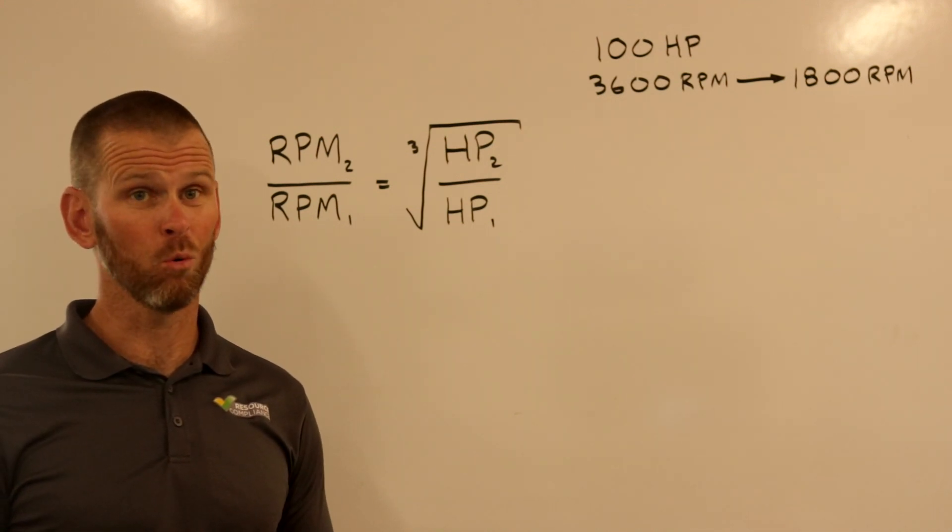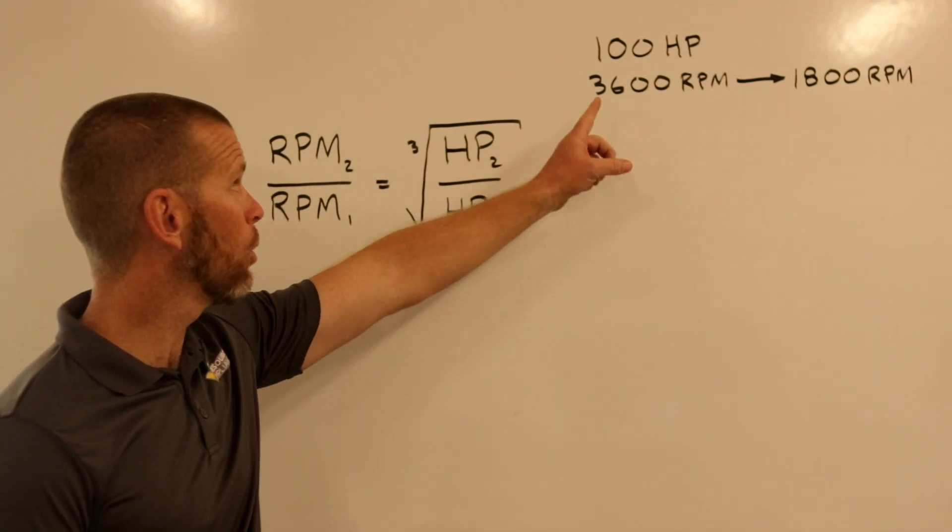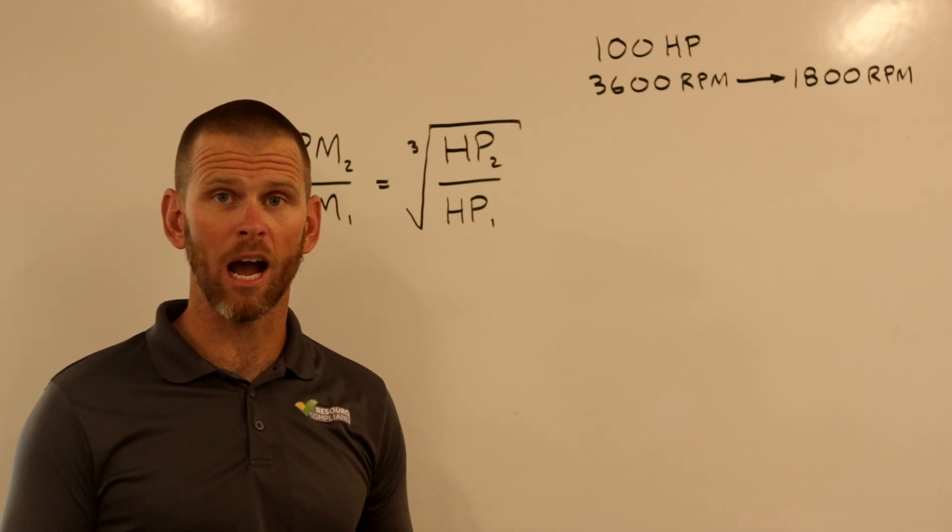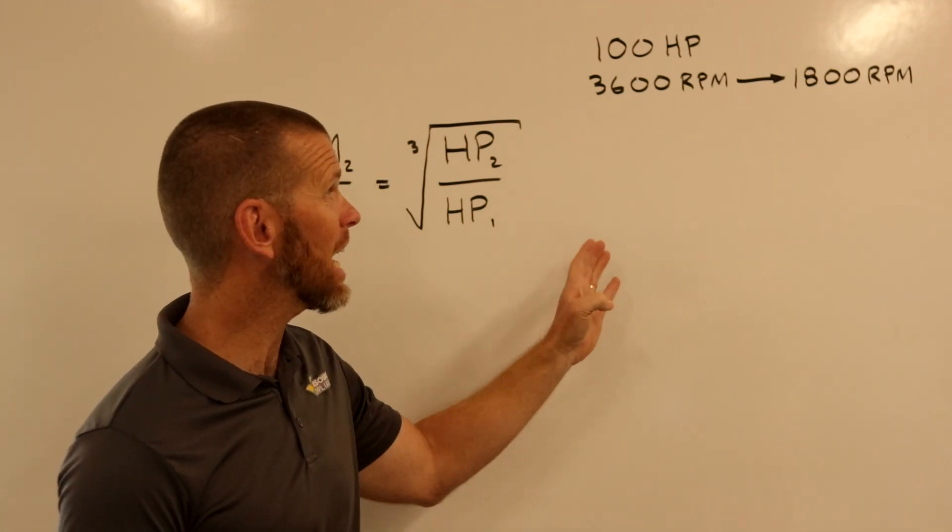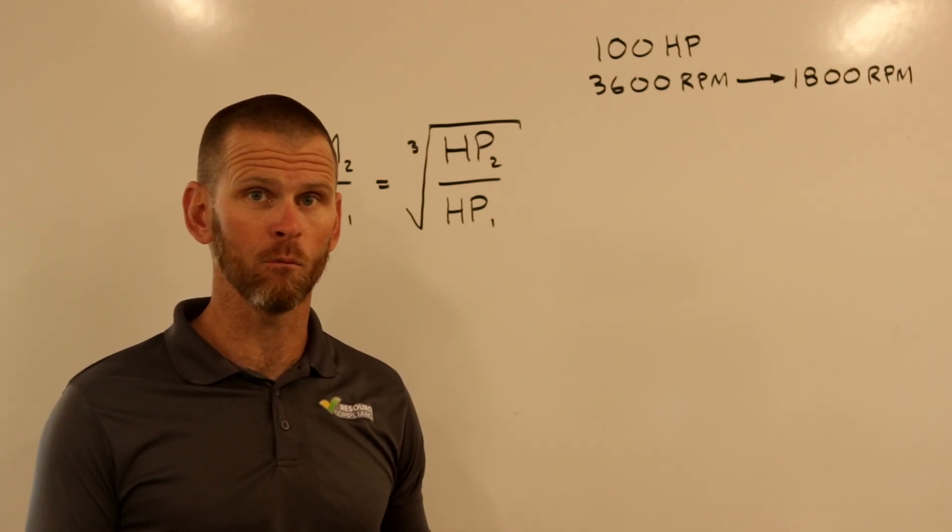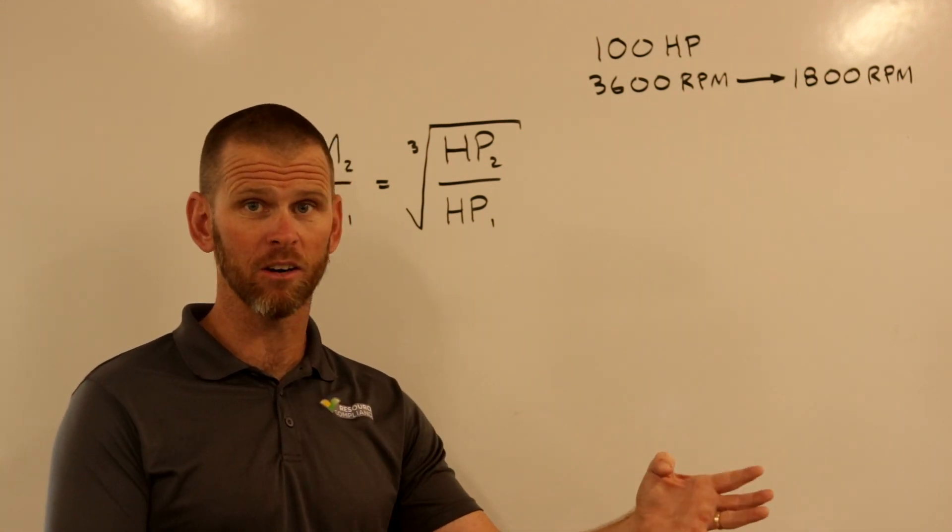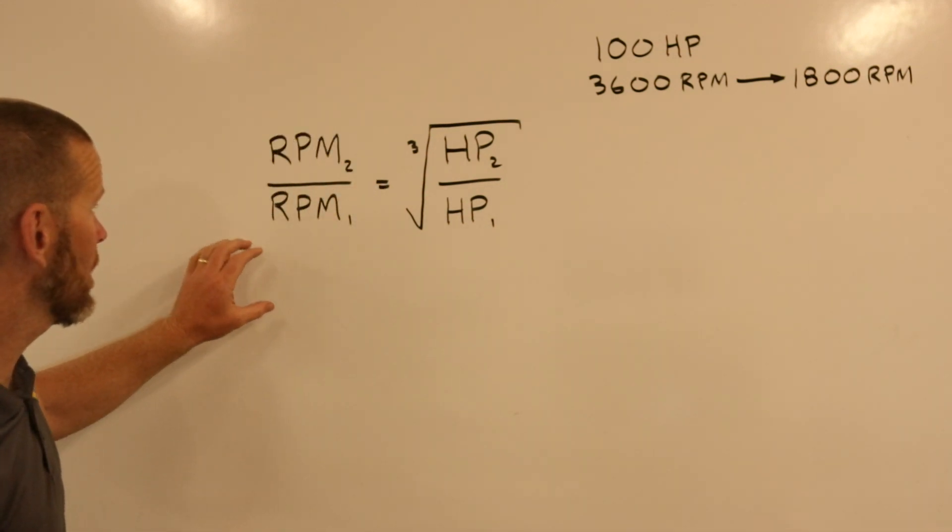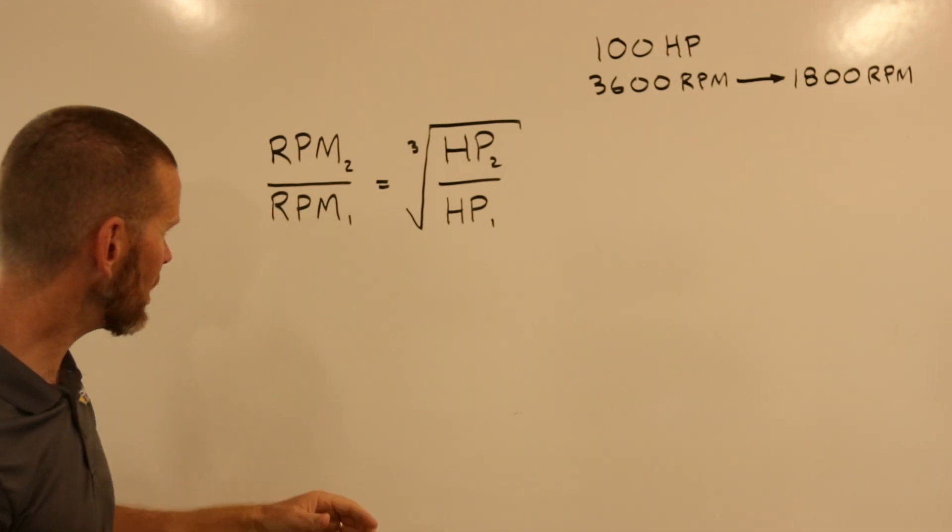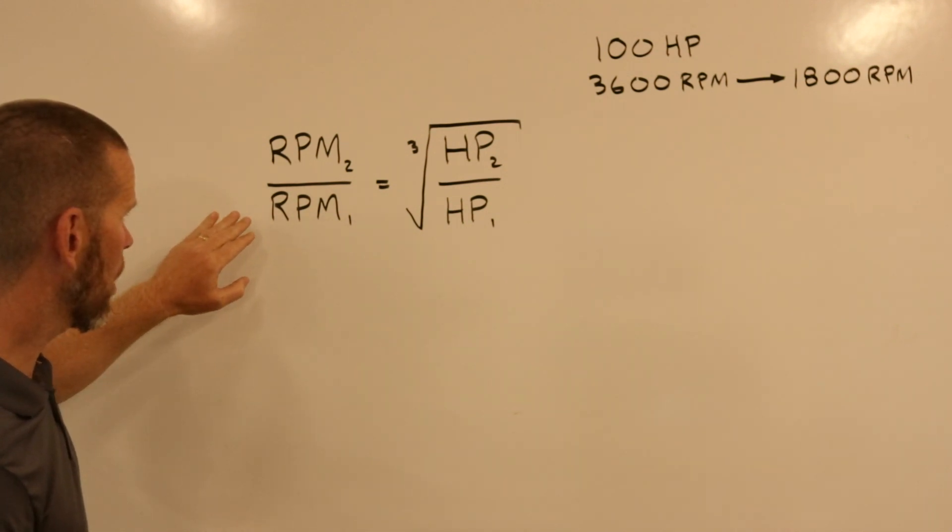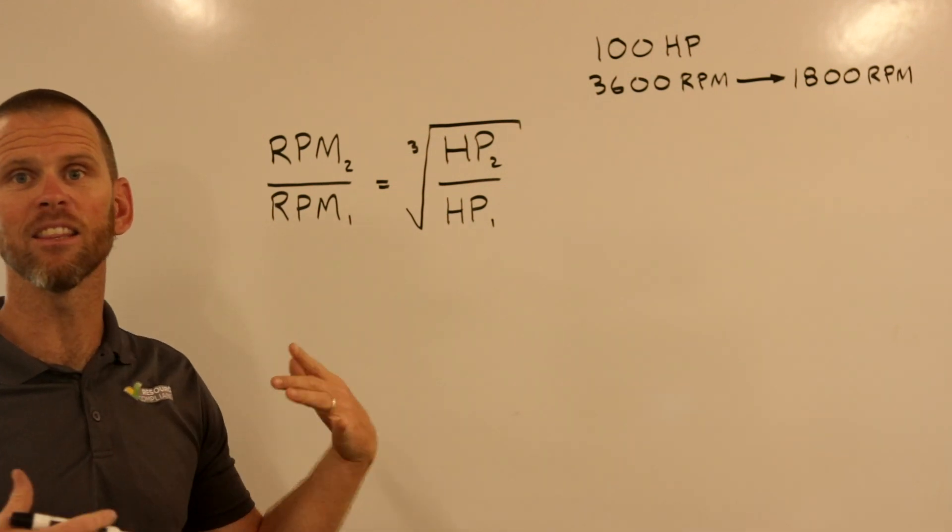So in this example, I want to show what the power savings or energy savings are when you lower the speed of a compressor motor or really any motor. This would apply to any motor, but in our application of refrigeration, we're talking about unloading compressors. So let's say we have a 100 horsepower compressor and we use a variable frequency drive or VFD to lower the speed of the motor from 3600 RPM, which is its natural or max speed, down to 1800 RPM, which is exactly 50%. We're going at half speed. The variable frequency drive would do this by reducing the frequency of the power from 60 hertz down to 30 hertz. We already learned that the relationship between RPM and horsepower is a cubic relationship.